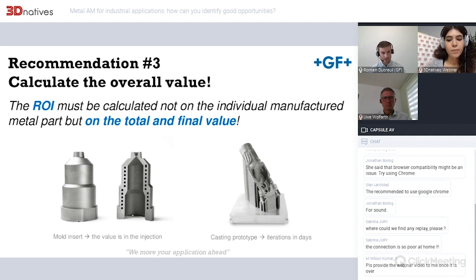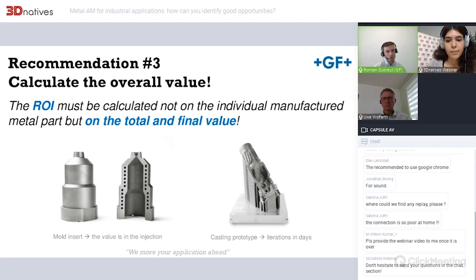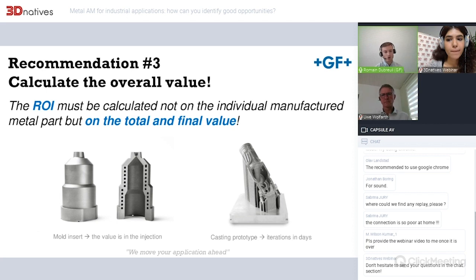The third recommendation is to calculate and evaluate the overall value. Although there are many examples where AM reduces the manufacturing cost of the part, in many cases the added value will be found elsewhere. For an injection mold, the value is most often not in decreasing the price of production of the mold insert, but large savings can be found in quality or cycle time during the injection process. For prototyping, value comes from the ability to create multiple iterations within days of geometries very similar to the final part. It is important to evaluate not only the manufacturing operation cost but the overall value.